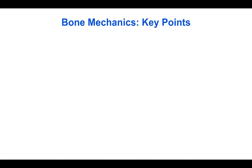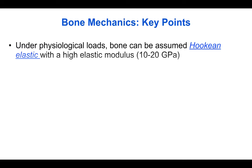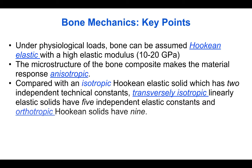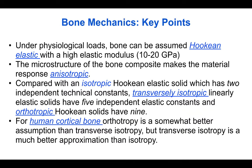To summarize the key points on bone mechanics: under physiological loads bone can be assumed to be Hookean elastic with a high elastic modulus compared with other tissues. The microstructure of the bone composite makes the material response anisotropic. Compared with an isotropic Hookean elastic solid which has two independent technical constants, transversely isotropic linearly elastic solids have five independent elastic constants, and orthotropic Hookean elastic solids have nine. For human cortical bone, orthotropy is a somewhat better approximation than transverse isotropy, but transverse isotropy is a much better approximation than isotropy.